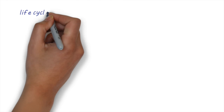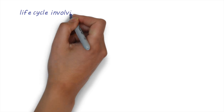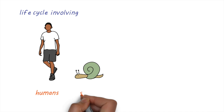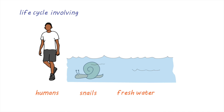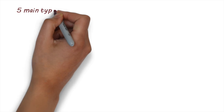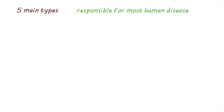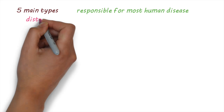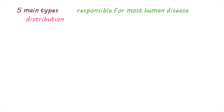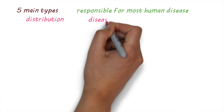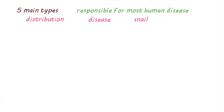Schistosomes have a very complex and interesting life cycle, involving humans, snails, and fresh water such as lakes, ponds, and reservoirs. Five main types of schistosomes are responsible for most human disease. They differ in their distribution, the kind of disease they cause, and the type of snails that they live in.